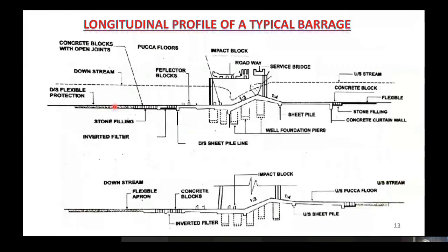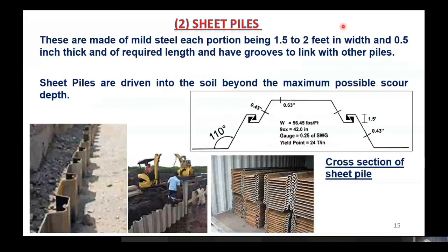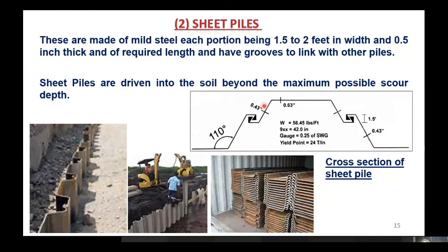Sheet piles are basically made of mild steel. Each portion width is about 1.5 to 2 feet, and the thickness of the plate is about half an inch. They have grooves for interlocking so there is no leakage. These photographs show stacks of manufactured sheet piles, and here you can see sheet piles being driven at the appropriate location for barrage construction.